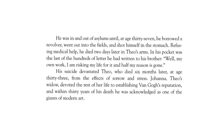In his pocket was the last of hundreds of letters he had written to his brother, stating: 'Well, my own work — I am risking my life for it, and half my reason is gone.' He felt he was only halfway to being insane. His suicide devastated Theo, who died six months later at age 33 from the effects of sorrow and stress. Theo's widow Johanna devoted the rest of her life to establishing van Gogh's reputation, and within 30 years of his death he was acknowledged as one of the giants of modern art.